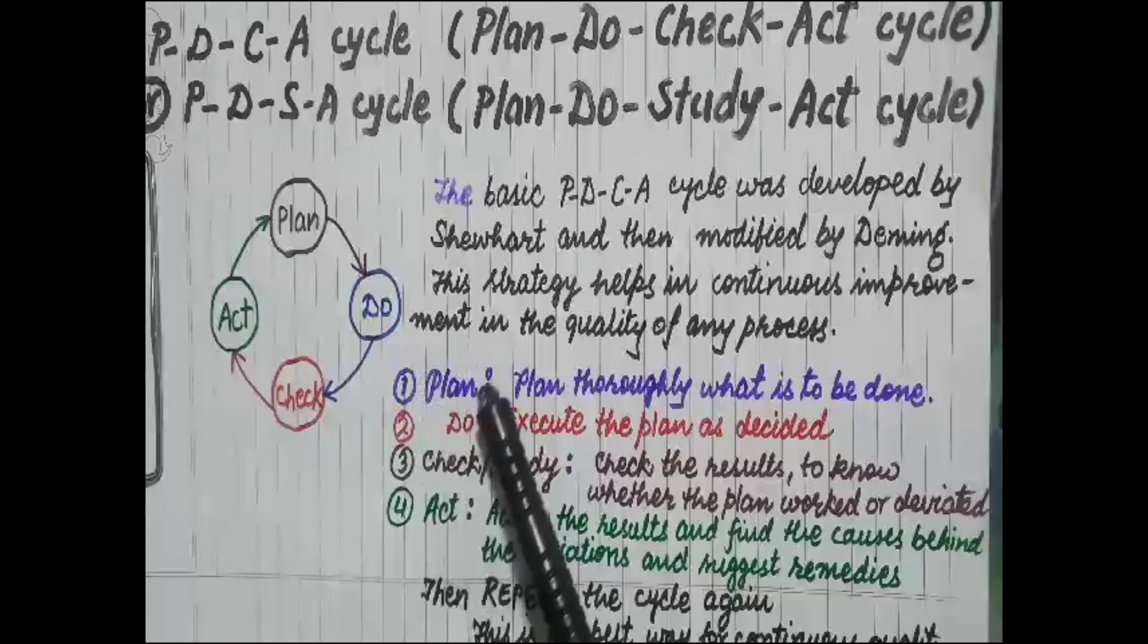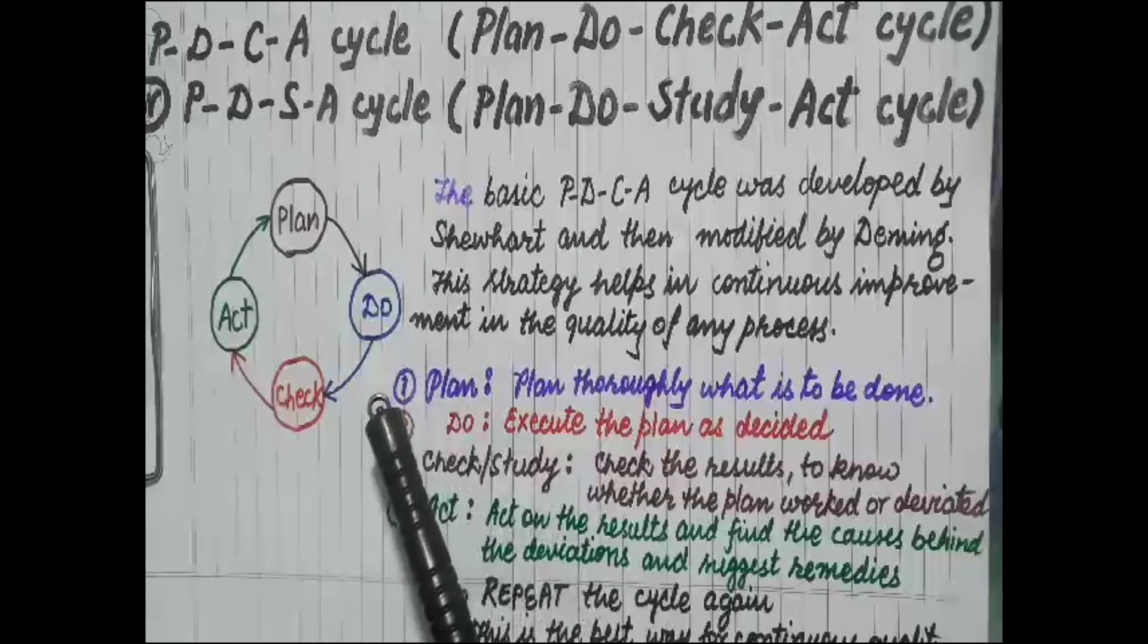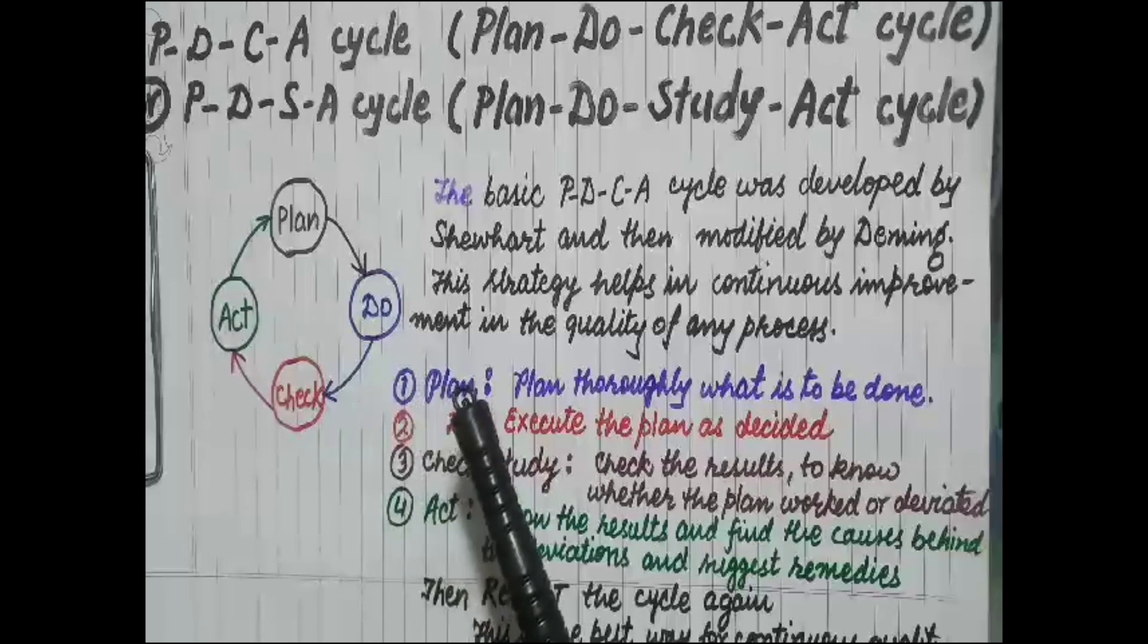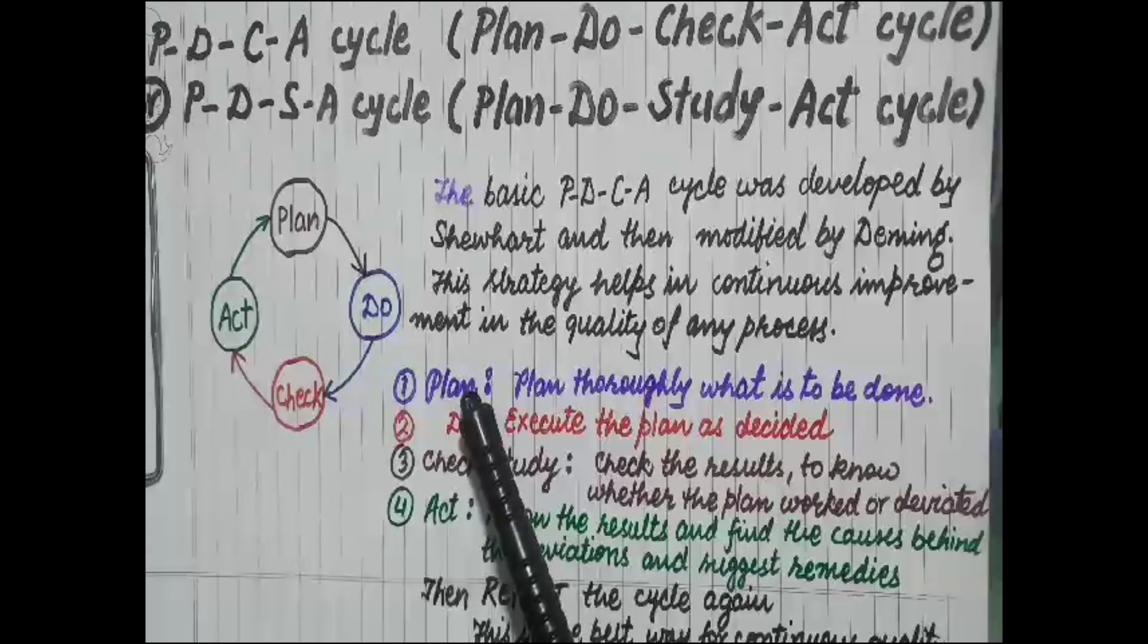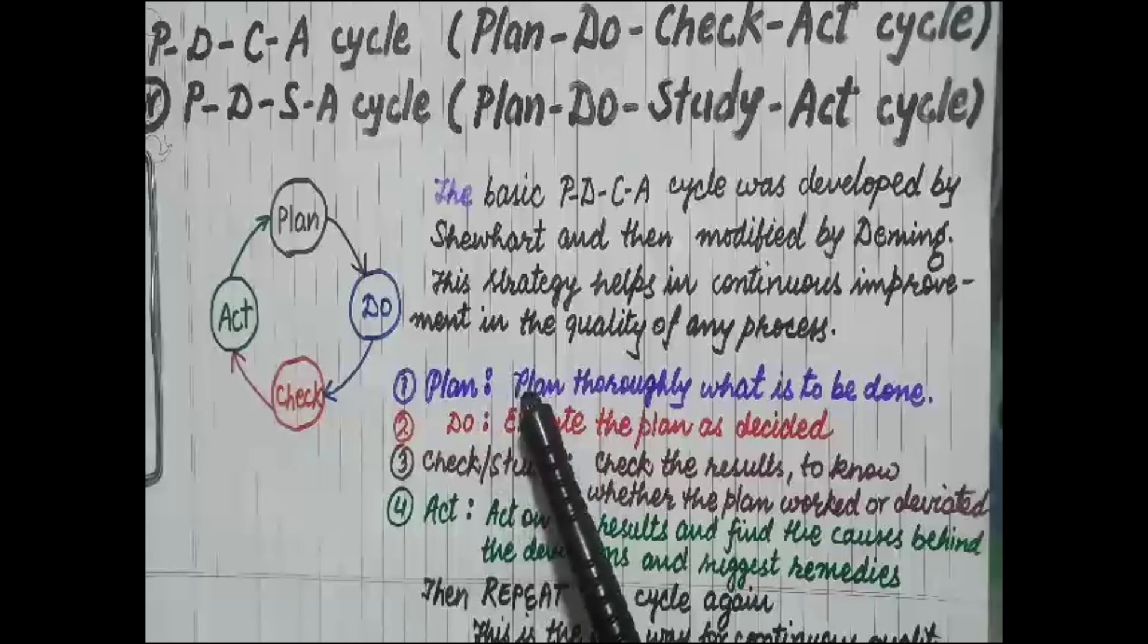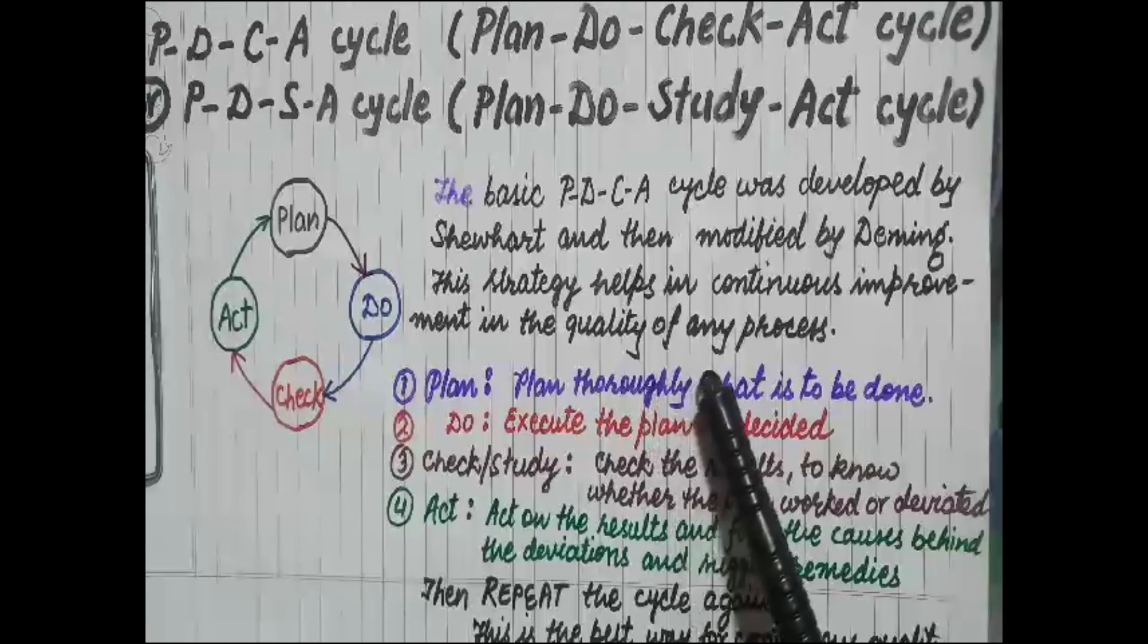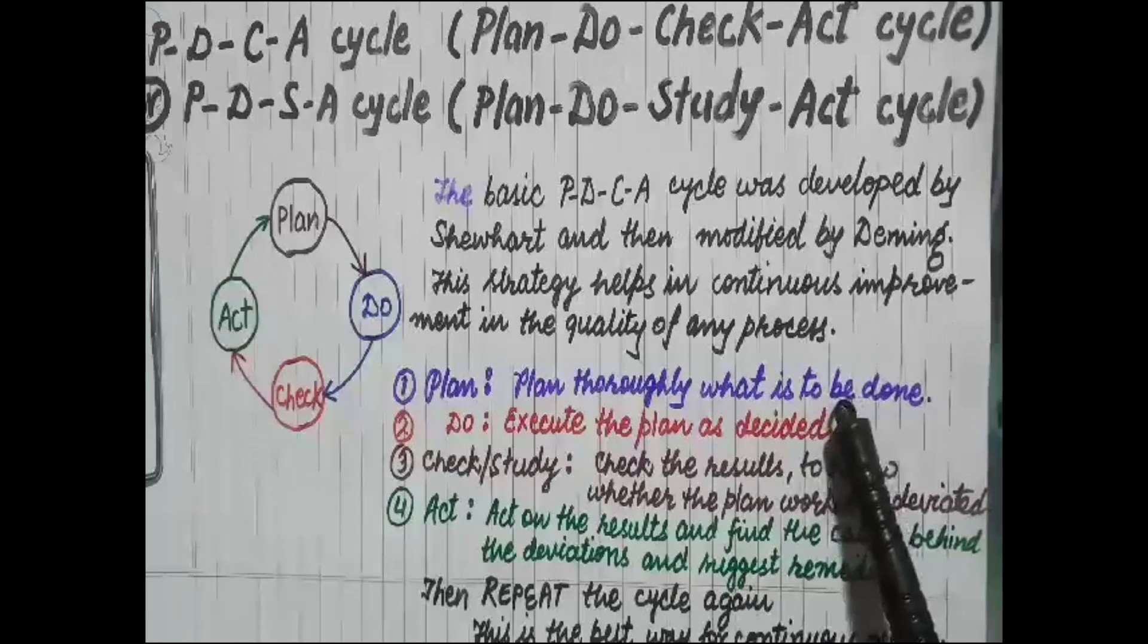Every machine operator, every section, every industry knows its goal and what is to be achieved. For achieving the goal, the plan is framed. So the first step is Plan - plan what is to be done. This is to be planned thoroughly, and the plan is documented.